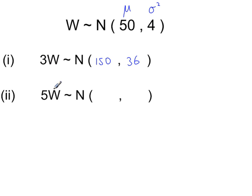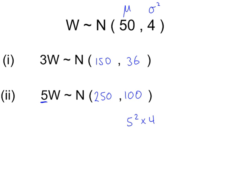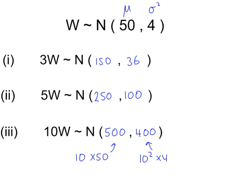For 5w — 5 times the weight of a single bag — the mean is 5 times 50. And for the variance, it's 5 squared times the variance. For 10w — 10 times the weight of a single bag — the new mean is 10 times the mean, and the new variance is 10 squared times the variance.